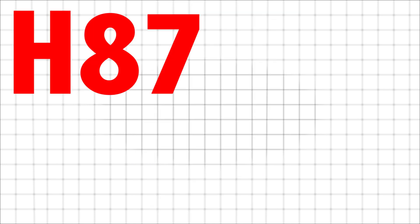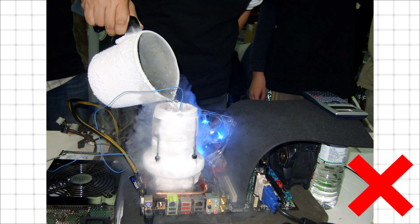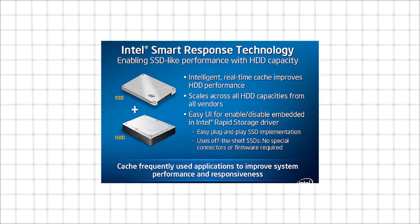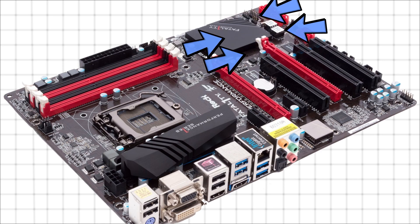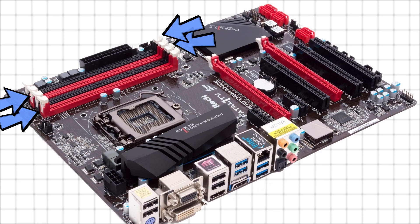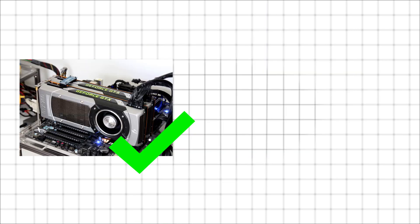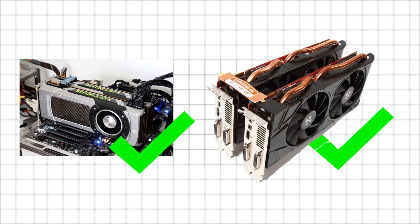Next up, we have the H87 chipset. You won't be doing any overclocking with this chipset either, but it does support Intel's Smart Response Technology, or SSD caching, and supports up to six SATA 3 ports as well as four sticks of RAM. You'll be able to do two-way SLI or Crossfire with this chipset, but not three.